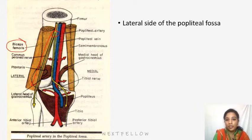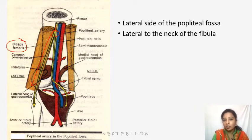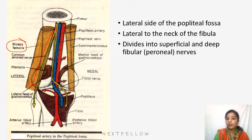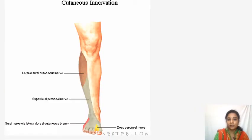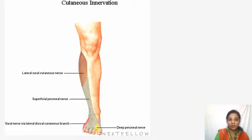The nerve is present in the lateral side of the popliteal fossa, winds around the lateral side of the neck of the fibula, and divides into superficial and deep fibular or peroneal nerves, giving branches to the knee and superior tibiofibular joint. Now, looking at the cutaneous distribution of the common peroneal nerve — the lateral side is its cutaneous distribution.